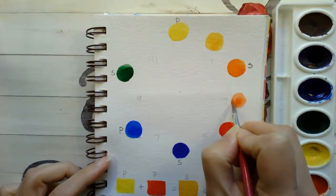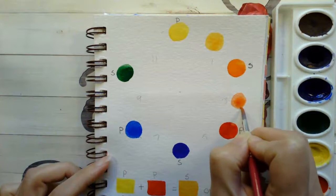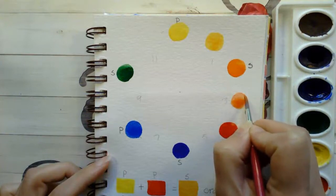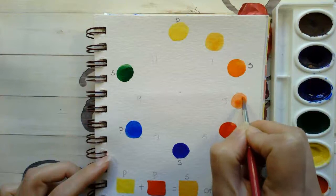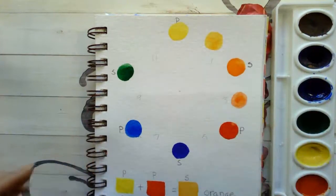Again, if your color is looking too red, add more orange. If it looks too orange, add more red. Okay, so we're always adjusting our colors as needed.